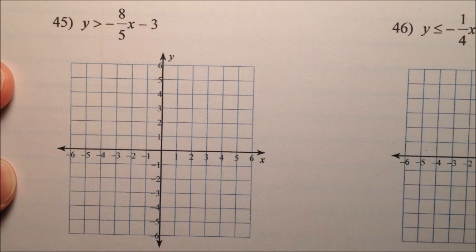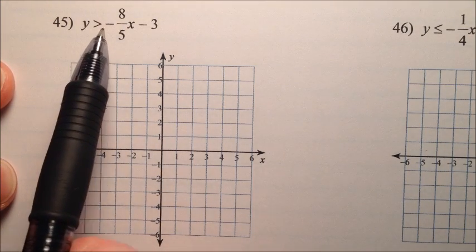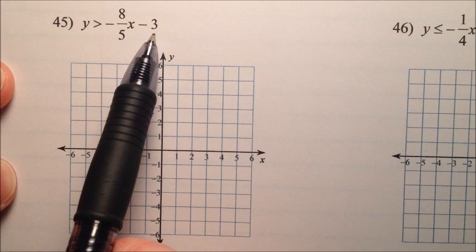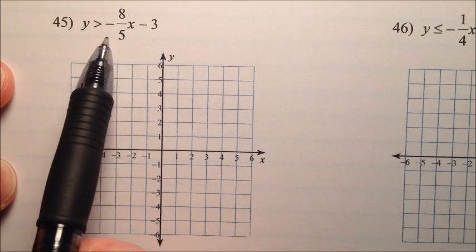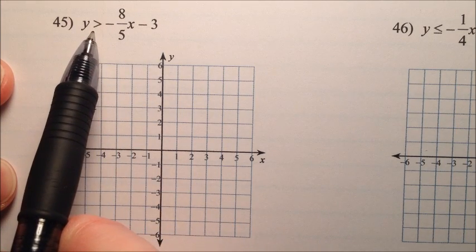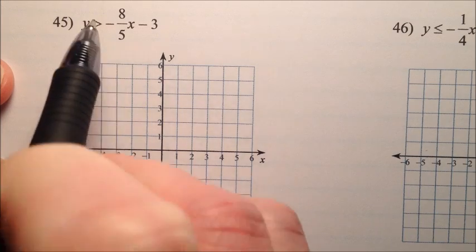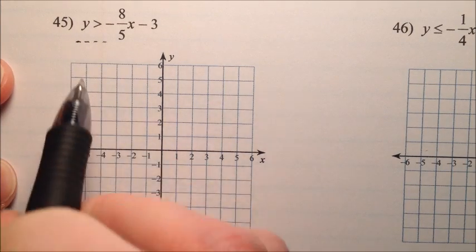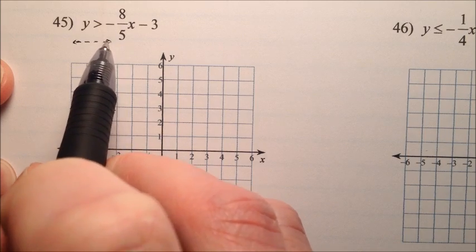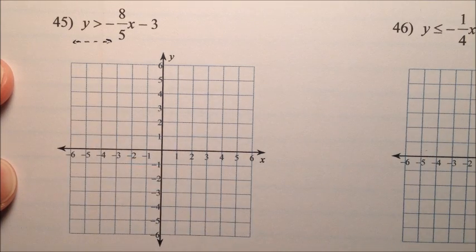So number 45, we have y is greater than negative 8 fifths x minus 3. So we'll go ahead and graph the line, and in this case you'll notice the sign here is just greater than, not greater than or equal to, so my line will be dashed. I'm going to put that there so I remind myself whenever I draw the line to draw it dashed.